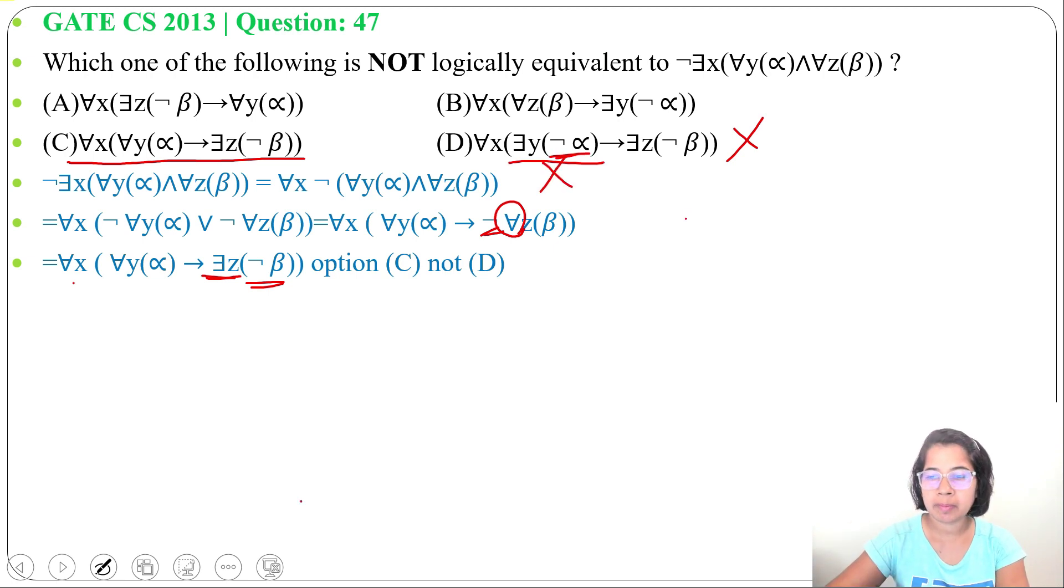OR is commutative. P or Q is equivalent to Q or P. So what we can do? Here we can switch this for all Y, alpha and for all Z, beta, we can switch.